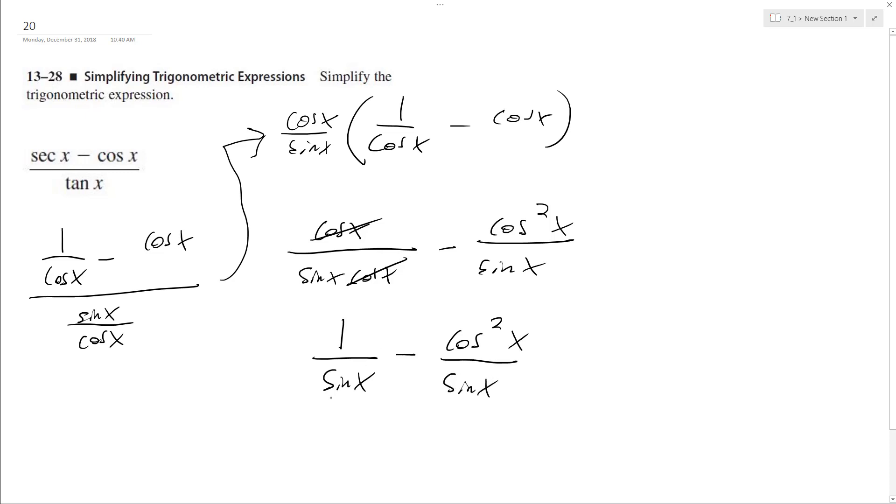We can take this a step further. Since they share the same common denominator, we can write this as 1 minus cosine squared x over sine x.